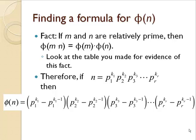If m and n are relatively prime numbers, then phi of m times n equals phi of m times phi of n. You could look at the table you made for evidence of that fact. Phi of 6 is phi of 3 times phi of 2, and phi of 20 is phi of 5 times phi of 4.